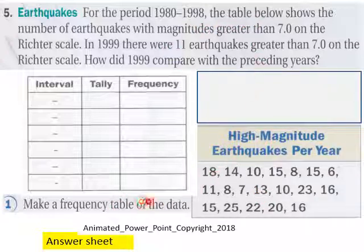Make a frequency table here of this data. The table shows the number of earthquakes with magnitudes greater than 7.0 on the Richter scale. In 1999, there were 11 earthquakes greater than 7.0 on the Richter scale. How did 1999 compare with preceding years? High magnitude earthquakes per year here.